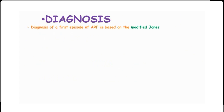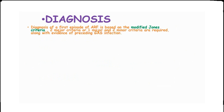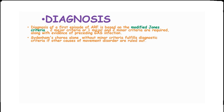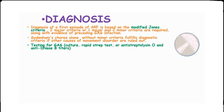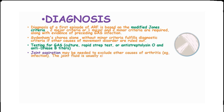Diagnosis of a first episode of acute rheumatic fever is based on the modified Jones criteria, whereby we need two major criteria or one major and two minor criteria, along with evidence of preceding group A streptococcal infection. Sydenham's chorea alone without minor criteria fulfills diagnostic criteria if other causes of movement disorders are ruled out. Culture, rapid strep test, or anti-streptolysin-O and anti-DNase B titers can also be used, and joint aspiration may be needed to exclude other causes of arthritis. The joint fluid is usually cloudy and yellow, with an elevated white blood cell count composed primarily of neutrophils, and the culture is negative.